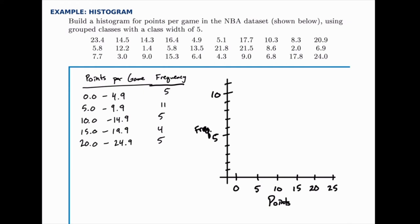And then we just draw a bar to the right height for each category. In the first class the frequency is 5, so we'll draw a bar up to 5, ranging from 0 to 5. Then from 5 to 10 the frequency was 11, so that one goes all the way up to the top of the graph.